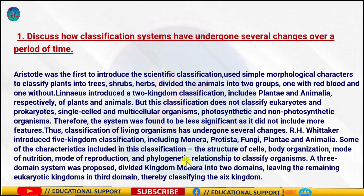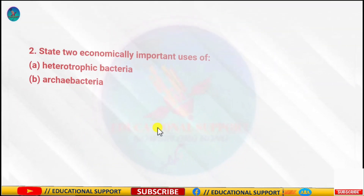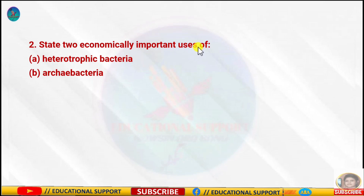A need was felt to include more characteristics such as mode of reproduction and evolutionary relationships to facilitate better categorization. Thus, R.H. Whittaker proposed a five-kingdom classification. The five kingdoms are Monera, Protista, Fungi, Plantae, and Animalia. The main criteria for classification in this system include cell structure, body organization, mode of nutrition, reproduction, and phylogenetic relationship.